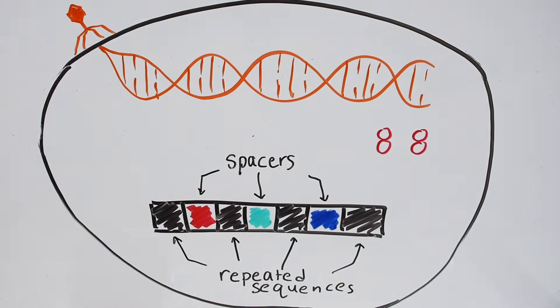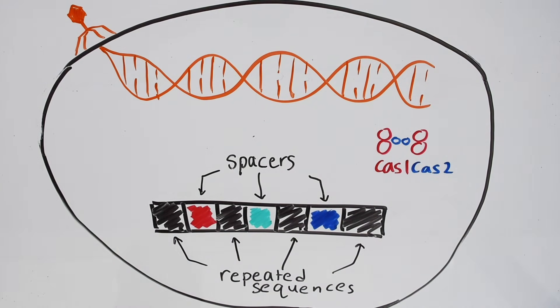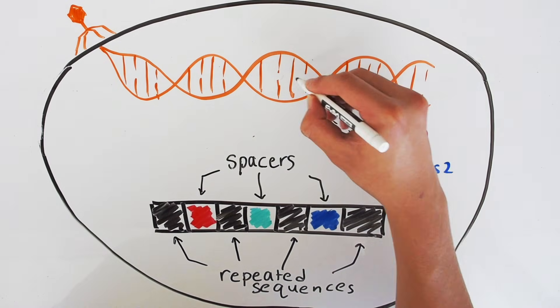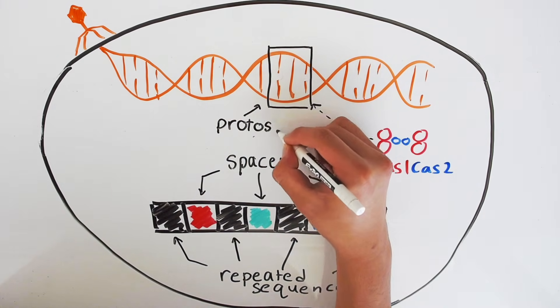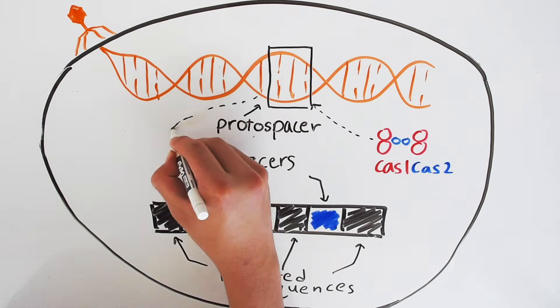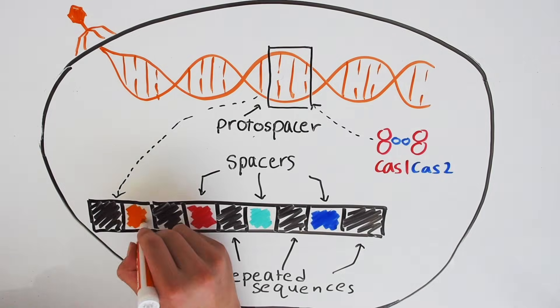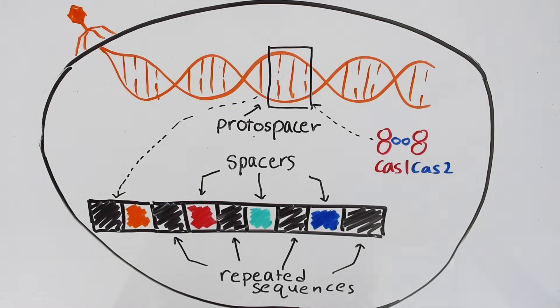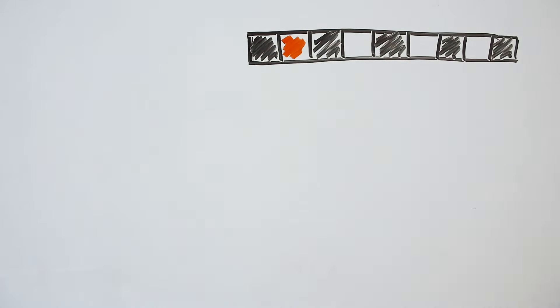This process begins when a protein complex known as Cas1 and Cas2 identifies the invading viral DNA and cuts out a segment of a specific length. This segment of DNA is known as the protospacer. The protospacer is inserted into the front of the CRISPR array. Now, the bacteria has an embedded memory of this phage infection. If the phage returns, the bacteria is armed to defend itself.